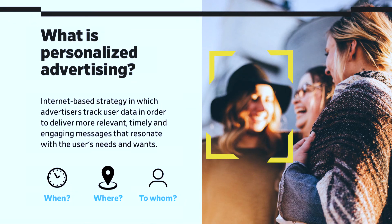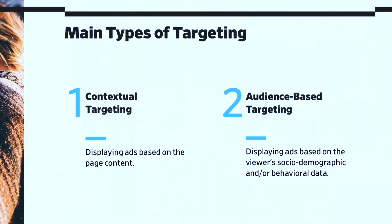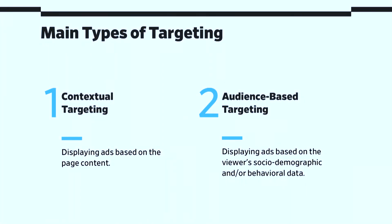This is really important when you're thinking about how do you get a user to really engage with your ad. The main types of targeting I'm going to talk about are contextual targeting and audience-based targeting. The difference is that contextual targeting really takes into account only what is going on on the page — the context.